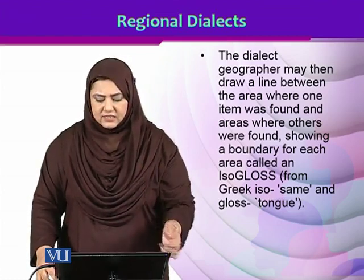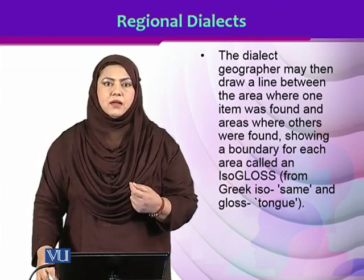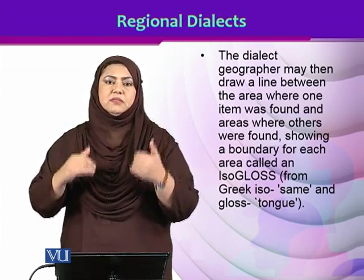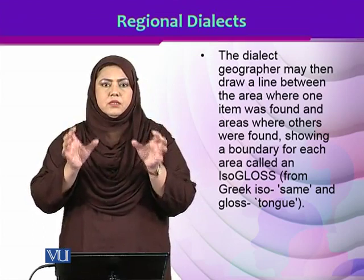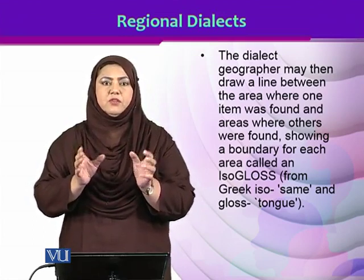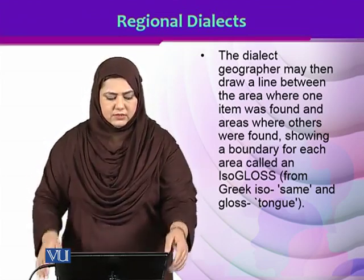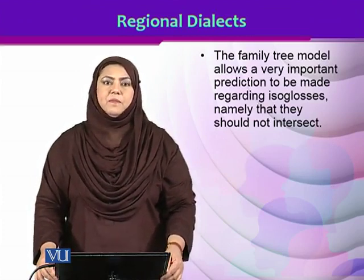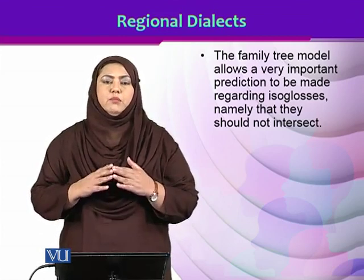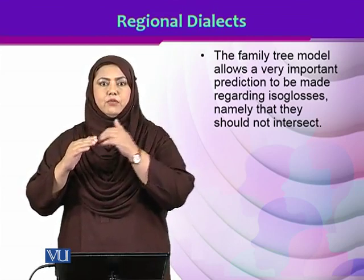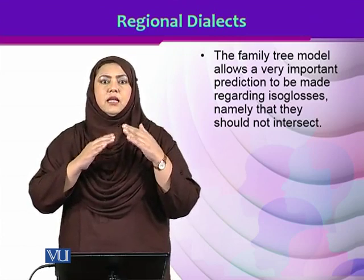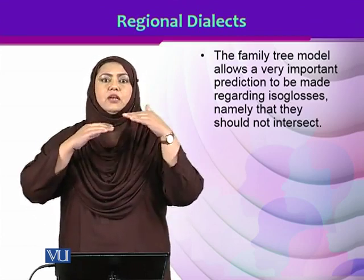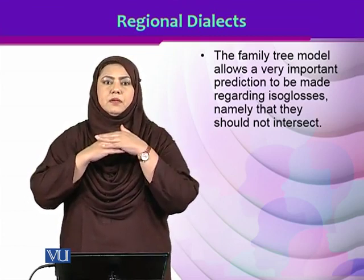What is an isogloss? It is a term taken from Greek: 'iso' means same, and 'gloss' means tongue. So technically, an isogloss is an area where people speak the same tongue. But when collecting lists of items used by different communities where two different varieties are spoken, what about those grey areas where everything mixes at the boundaries? The family tree model makes an important prediction regarding isoglosses — namely that they should not intersect. This is also a problem with the family tree model, because it asserts that isoglosses are completely separate: they cannot intersect, overlap, or intermingle.